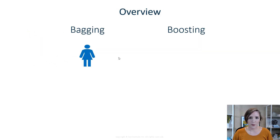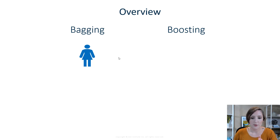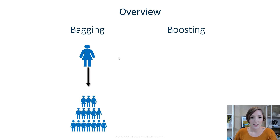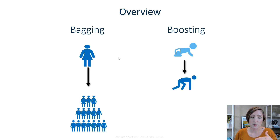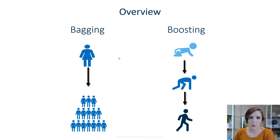I'm going to give a really simple overview using people as an example. On the left you have bagging, represented by a person. If you're going to use the bagging method to improve, all you're doing is adding more people to the scenario — adding multiple models to capture variance. On the right you have boosting, where you start off with a weak learner and improve upon the errors over time. It's like your model is maturing and growing up to achieve its performance improvements.